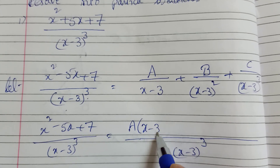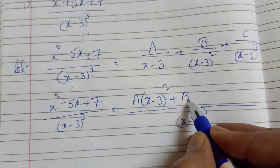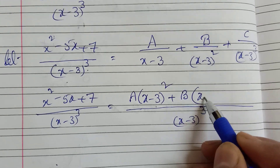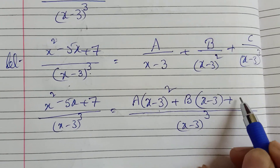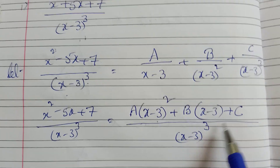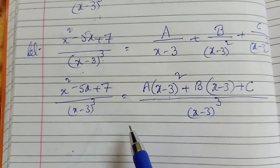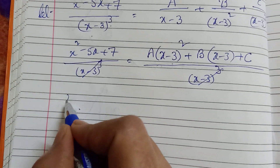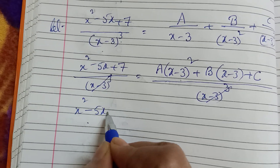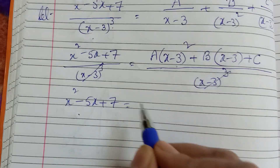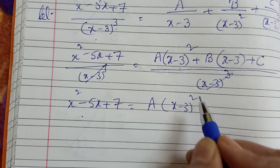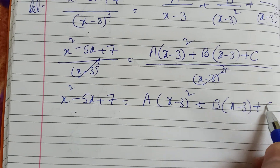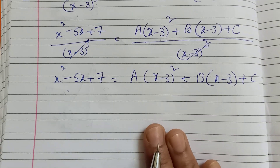So we have: A into (x minus 3) whole square, plus B of (x minus 3), plus C. Equating the numerators: x squared minus 5x plus 7 equals A of (x minus 3) whole square, plus B of (x minus 3), plus C.